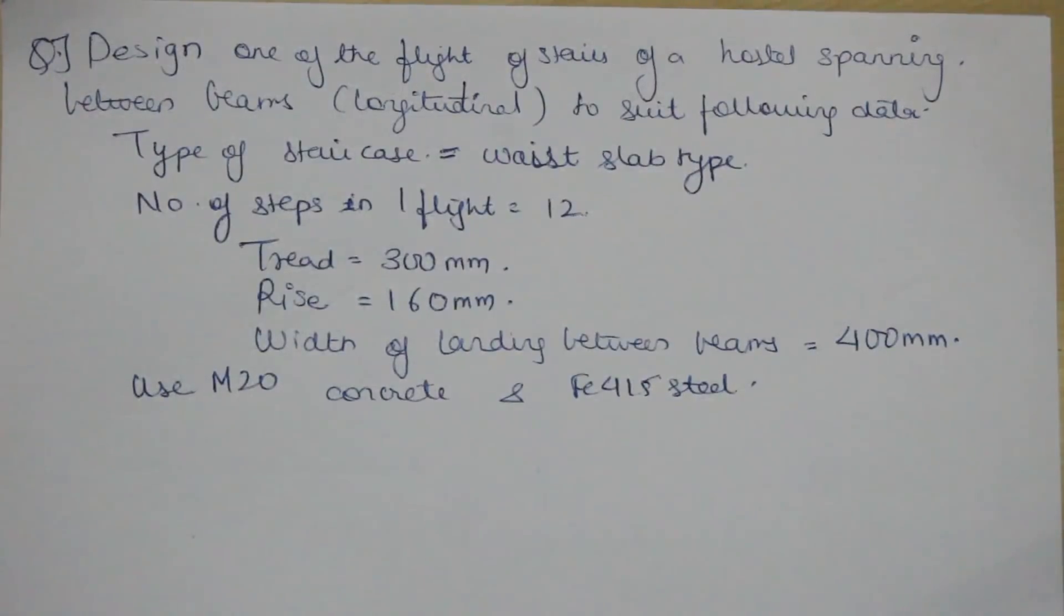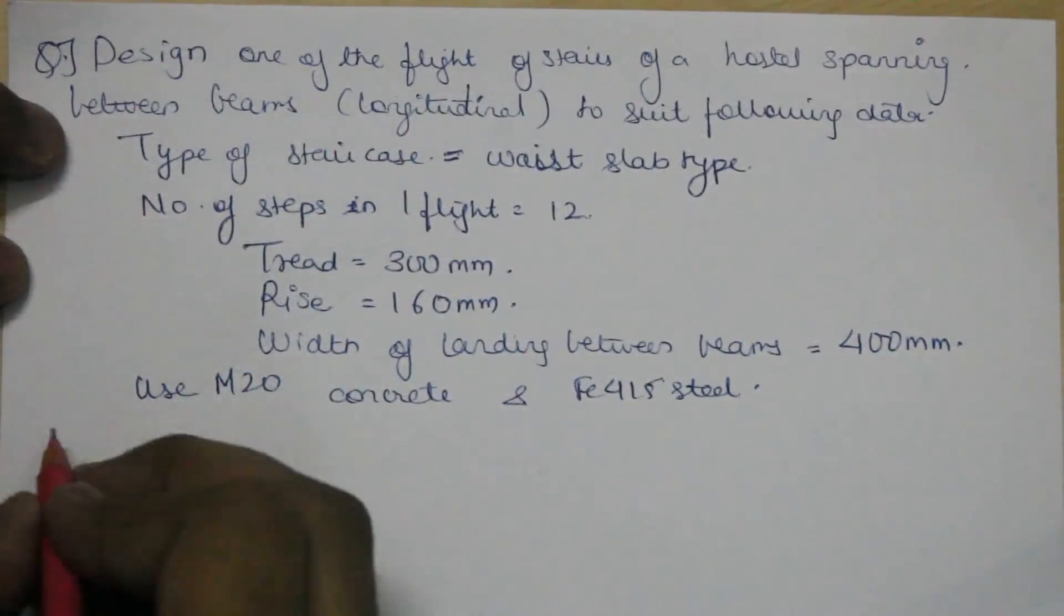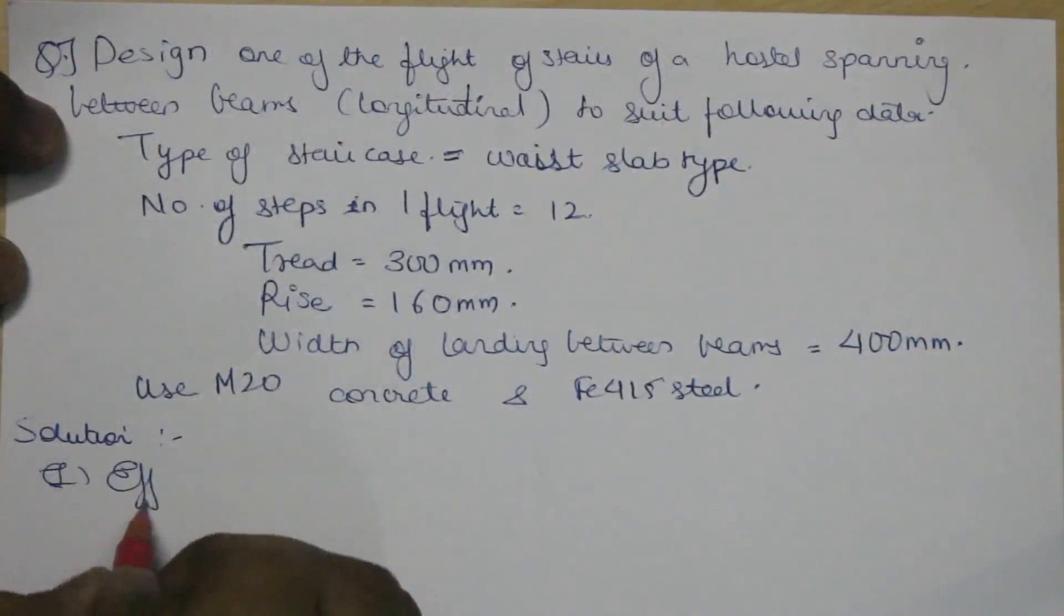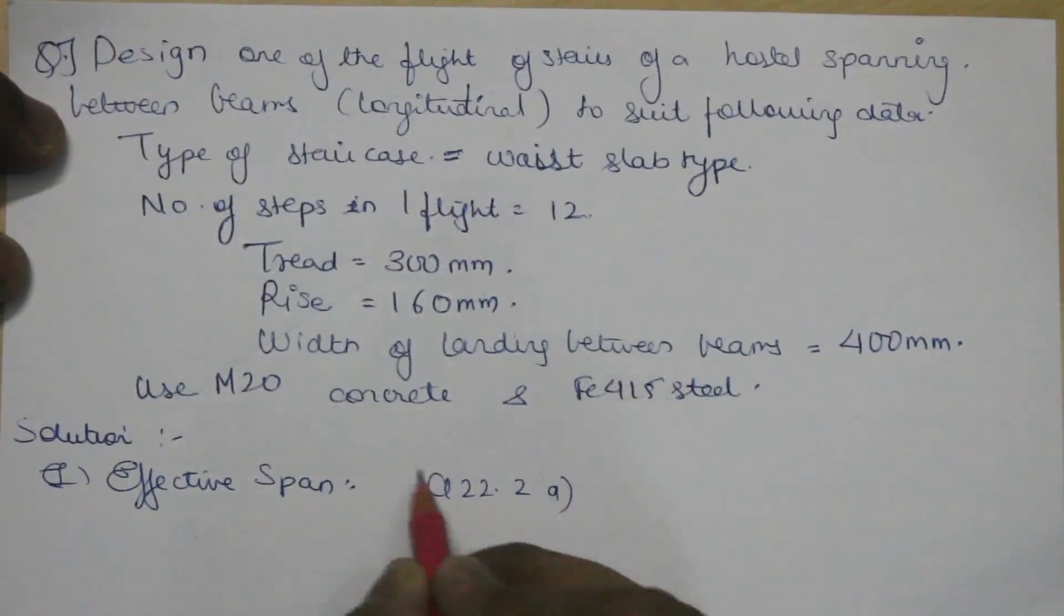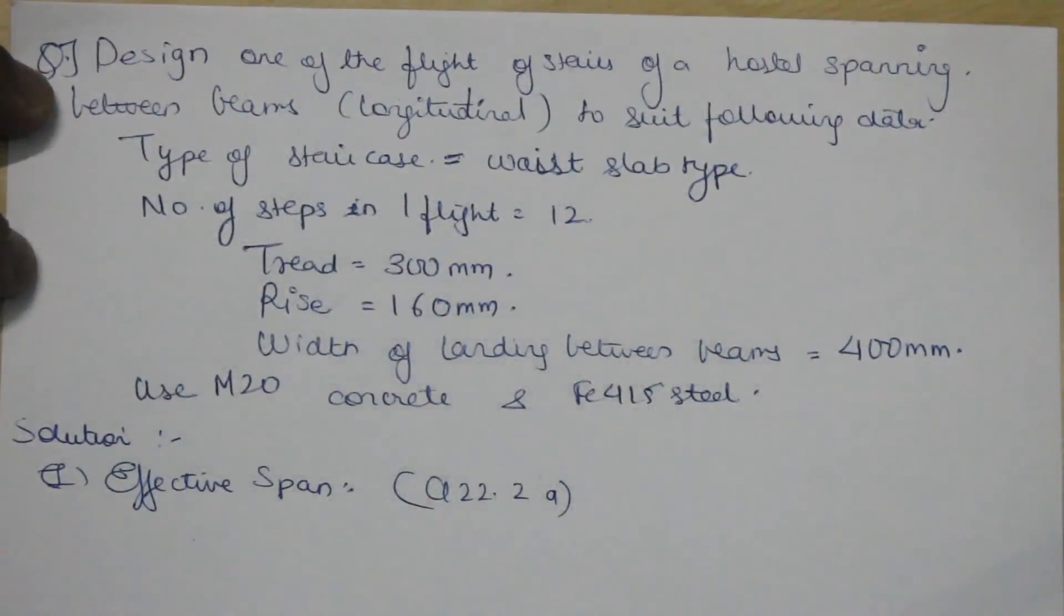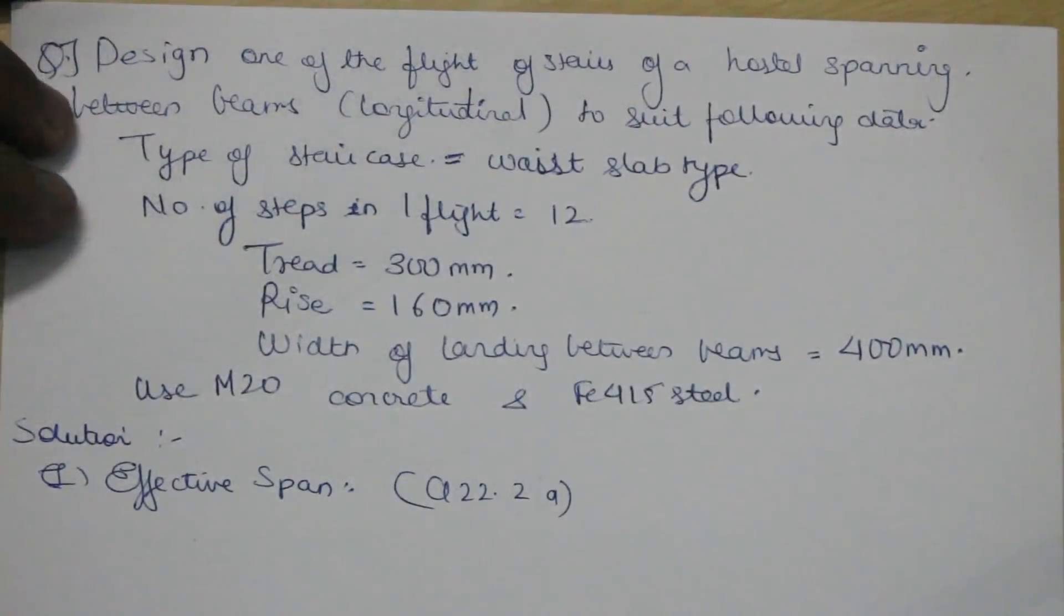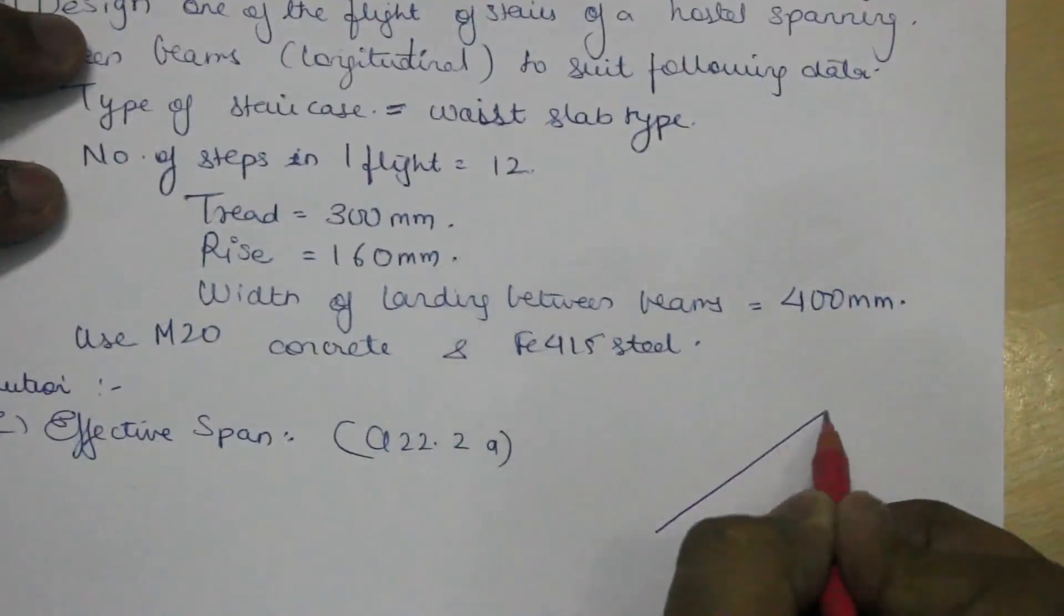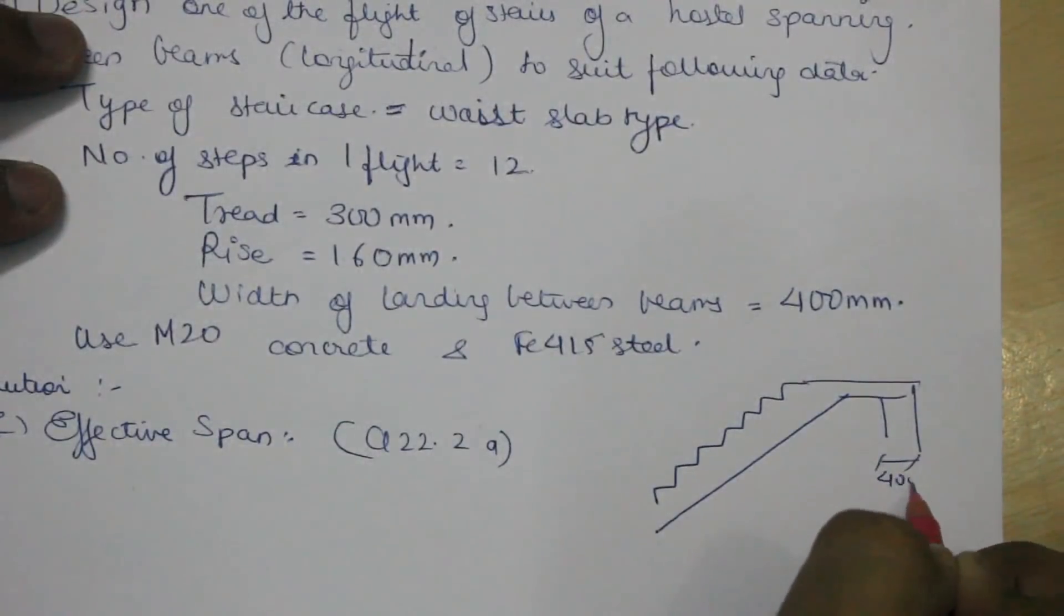Let's start solving this. The first step would be to calculate the effective span. This will be based on clause number 22.2a of the IS code, which says that the effective span will be the center to center distance between the end supports. In this case, the span between the stair, these are the supports that is 400 mm.